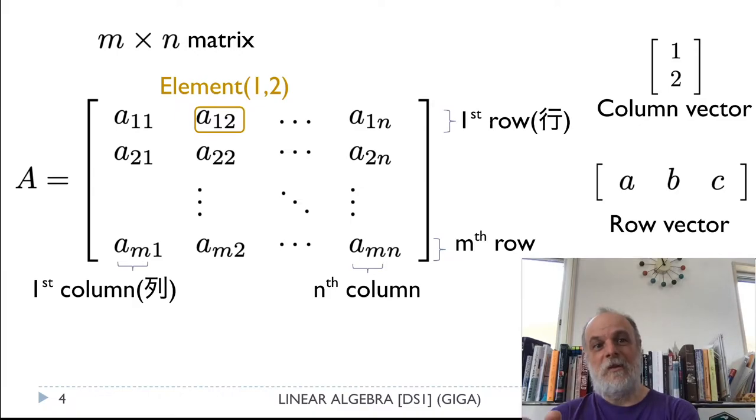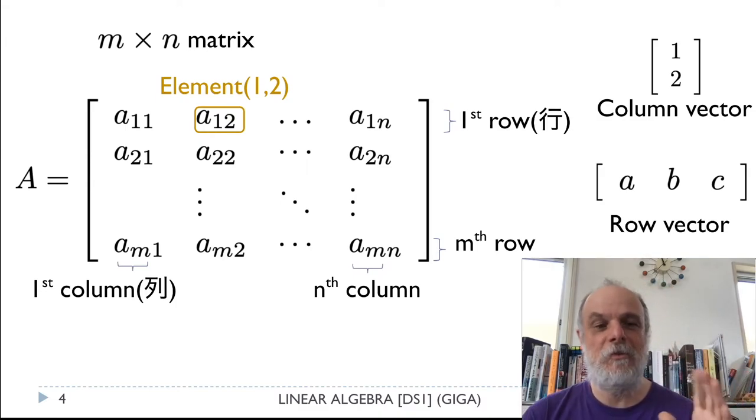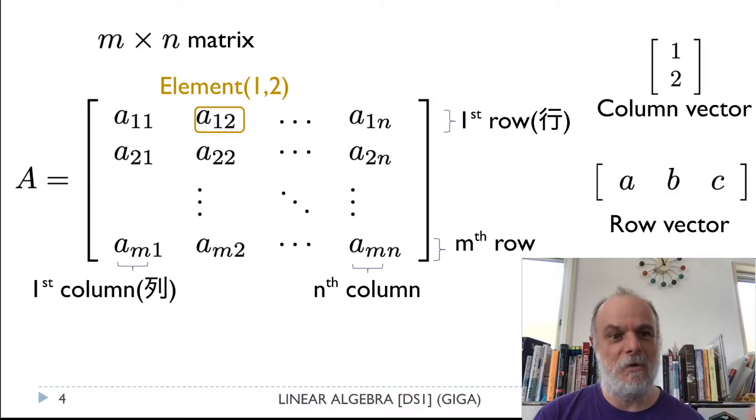So generalizing, this is an M by N matrix. It's got M rows and N columns. You can see we've numbered them. So we've given the matrix itself the variable name A. Usually we're going to write matrices using capital letter A or capital B or what have you.